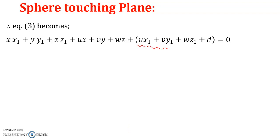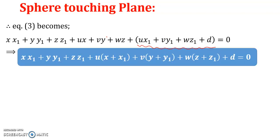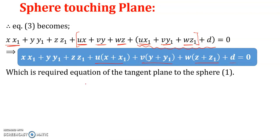Substituting and rearranging all terms, the final equation of the tangent plane becomes: xx₁ + yy₁ + zz₁ + u(x + x₁) + v(y + y₁) + w(z + z₁) + d = 0. This is the required equation of the tangent plane which is tangential to the given sphere.